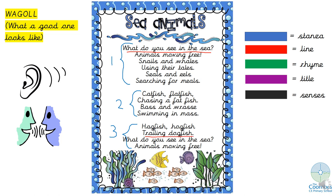Could you remember what a rhyme was? A rhyme is where the words are sounding similar. Can you spot any rhyming pairs? Sea and free, whales and tails, eels and meals. Well done — it's following that rhyming pattern.